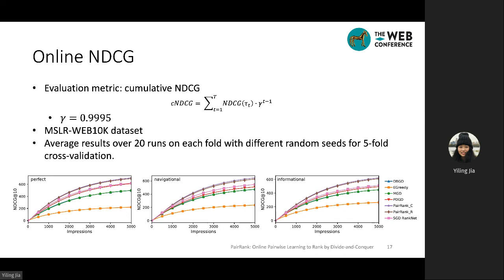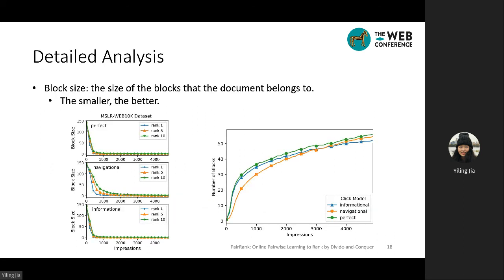To further verify the effectiveness of the exploration strategy in Pair Rank, we examine the trace of block size across queries during the online model update. Since Pair Rank uses random shuffling within each block for exploration, a smaller block size is preferred. The first figure shows the size of document blocks at rank positions 1, 5, and 10. We can clearly observe that after 100 rounds of iterations, the block sizes quickly converge to 1, especially at the top-ranked positions. The second figure shows the changing number of blocks, which increases as the model interacts with users, indicating convergence of model learning.